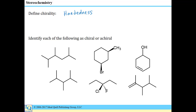Knowing that, we can identify whether each of these molecules is chiral or achiral. In this first example, there's no way to draw a plane of symmetry, and therefore it must be a chiral molecule. The second example also lacks a plane of symmetry. One of the mistakes people sometimes make is they try to draw a plane of symmetry here, but that would try to make some symmetry between a CH3 and a bromo. So again, that's not a plane of symmetry, and this is a chiral molecule.